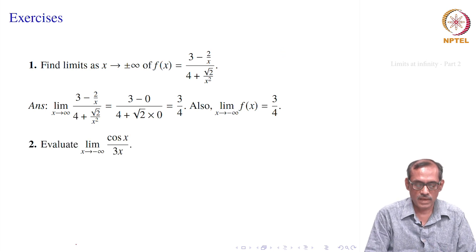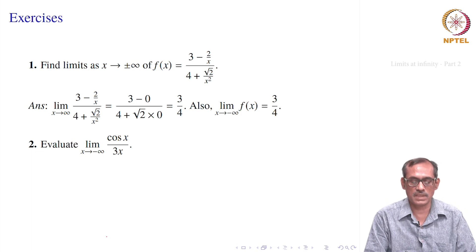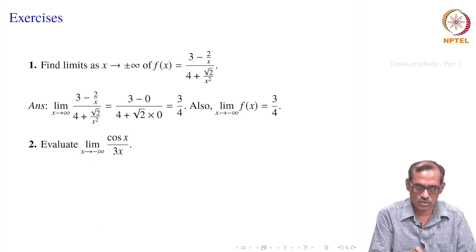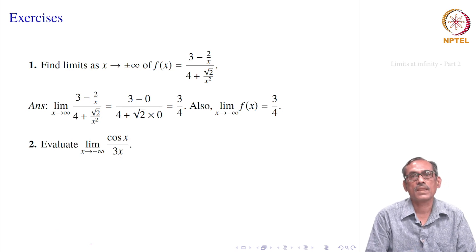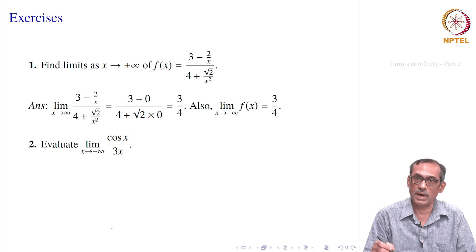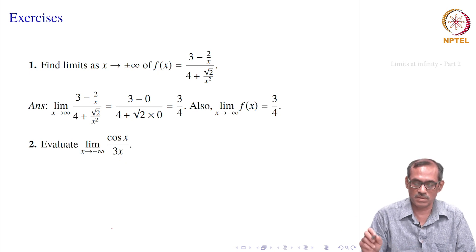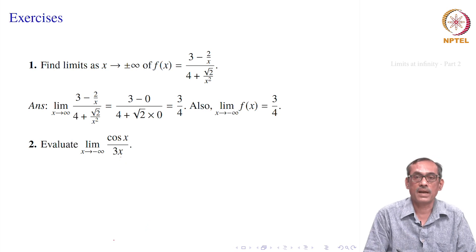Let us take the second problem. It asks to compute the limit as x goes to minus infinity of cos(x) divided by 3x. When x goes to minus infinity, the denominator 3x goes to minus infinity. On the top we have cos(x), which will not have a limit at infinity because it oscillates, taking values between minus 1 and 1 depending on multiples of pi.